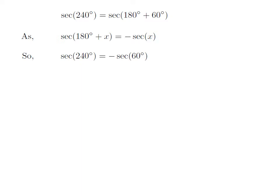Let us apply the above identity for secant of 240 degrees. Here x is 60 degrees, so secant of 240 degrees is equal to minus secant of 60 degrees.